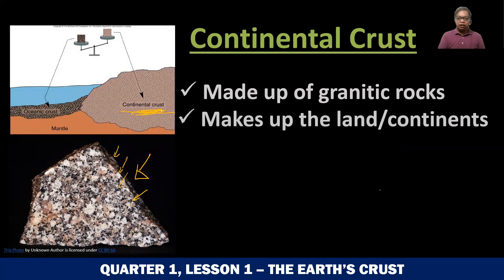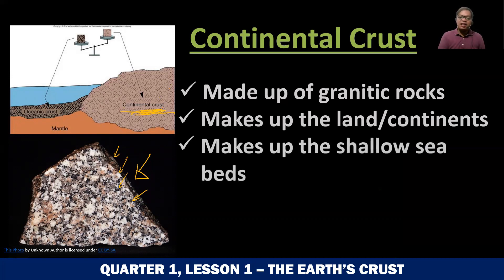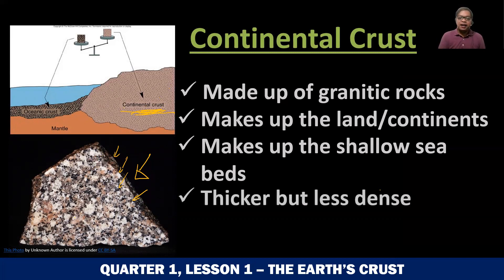Another characteristic of a continental crust is, of course, it makes up the land or the continents — from the name itself. This is the type of crust that you can see in lands and the continents. It also makes up the shallow sea beds, dun sa mababaw na part ng dagat. So yung lupa dun, it's still continental crust. As you can see here, continental crust is thicker — makapal yung continental crust — but it is less dense. Ibig sabihin, mas magaan siya.